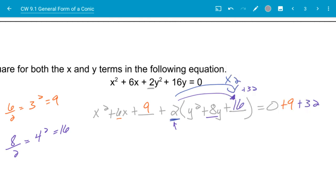So now I can rewrite this as the completed square. x squared plus 6x plus 9. That's going to be x plus 3 squared plus 2 times y plus 4 squared is equal to 41. And there I have completed my square.